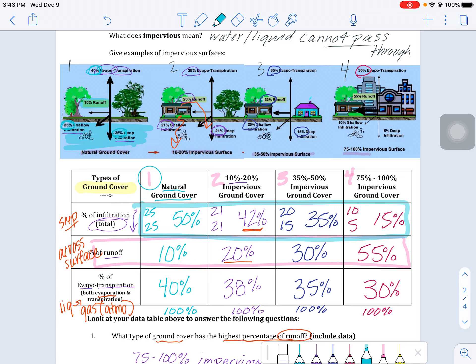So make sure you're giving the name of the ground cover, natural or what percent impervious, including that piece of data that needs to be in there. And then your because is just explaining why that environment gives us that highest value.